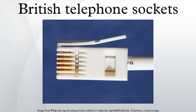British telephone sockets were introduced in their current plug-and-socket form on November 19, 1981 by British Telecom to allow subscribers to connect their own telephones. The connectors are specified in British Standard BS 6312. Electrical characteristics of the telephone interface are specified by individual network operators, for example in British Telecom SUN 351. Electrical characteristics required of British telephones used to be specified in BS 6305.